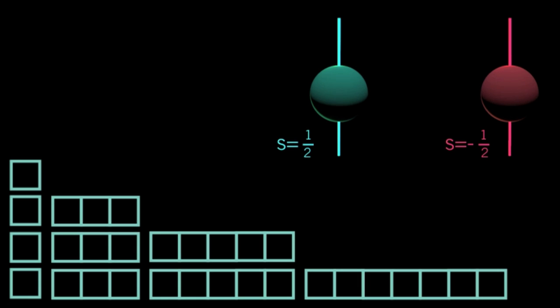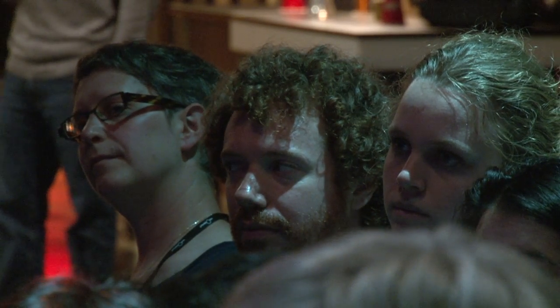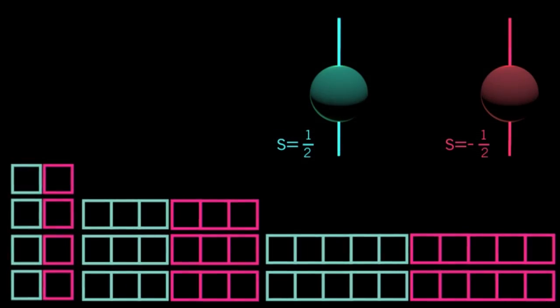And we call this the spin state of the electron. And for technical reasons, we denote it with the letter S, and it's either one-half or negative one-half, which means that all of these states we've talked about before, each of them has a twin state, which represents the electron doing the same thing while inside out. So these are all of the dynamical states that the electron can take on inside of an atom.